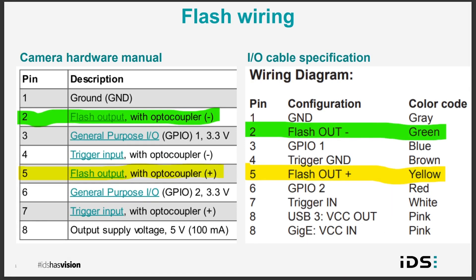First, it's very important to refer to your exact camera model specifications before applying any voltage to the I/O port of the camera. Many IDS cameras have dedicated flash output pins that are galvanically isolated using an optocoupler to protect the camera and PC from electrical surges. The output of the optocoupler can be used as an open collector or open emitter output, meaning it behaves like a switch that closes when the output signal is active and opens when the output signal is inactive.